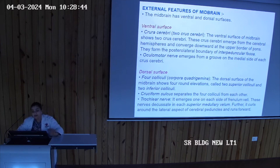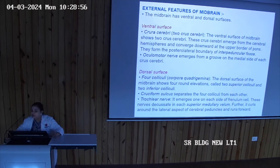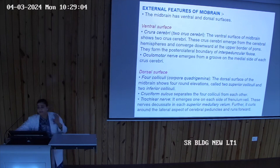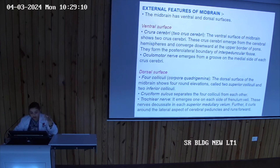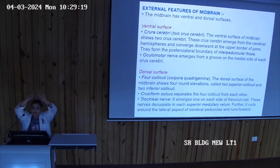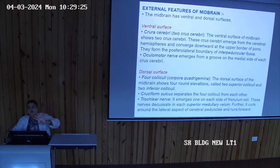The trochlear nerve is found on each side of the frenulum veli. These nerves decussate — meaning they cross — in the superior medullary velum. The trochlear nerve then curls around the lateral aspect of the cerebral peduncles and runs forwards. The nucleus is in a different place from the white matter nerve fibers.